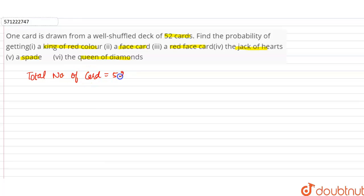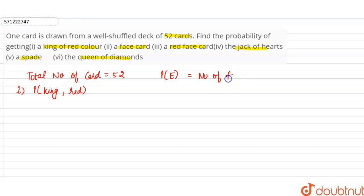In the first part, it is asked to find the probability of getting a king of red color. Probability of an event is number of favorable outcomes divided by total outcomes. Favorable outcomes are a king of red color. There are two king cards which are red in color, out of total cards 52.